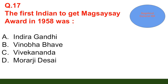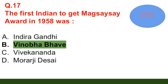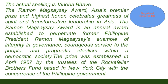Question number 17: The first Indian to get the Magsaysay Award in 1958 was — option A: Indira Gandhi; option B: Vinoba Bhave; option C: Vivekananda; option D: Morarji Desai. The correct answer is option B — Vinoba Bhave. The Ramon Magsaysay Award is a premier prize celebrating greatness of spirit and transformative leadership in Asia, established in April 1957 by the trustees of the Rockefeller Brothers Fund in New York City.